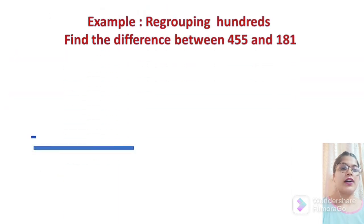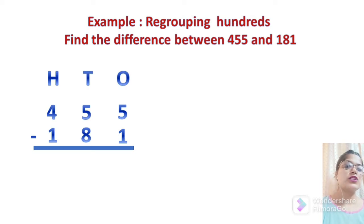Now, we will regroup the hundreds. For that, we have number 455 and 181 here. Let's give the heading of ones, tens and hundreds first and then in 455, we have 5 that will be in the ones column. Then again, we have 5 under tens column and the last one is 4 under hundreds column. In 181, we have 1 as ones digit then 8 as tens digit. Again, we have 1 that will be under hundreds column. We start with ones, 5 minus 1, we will simply write as 4.